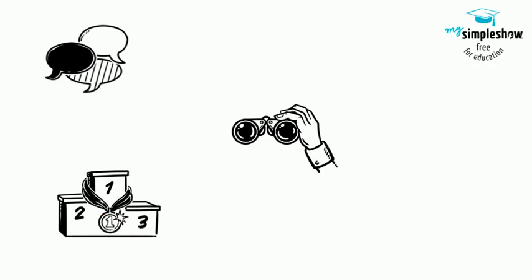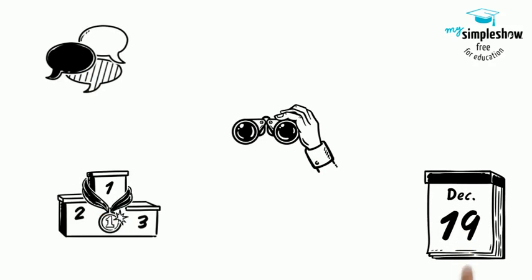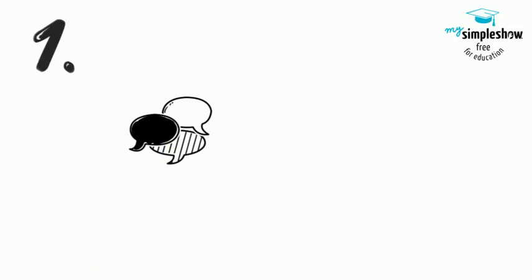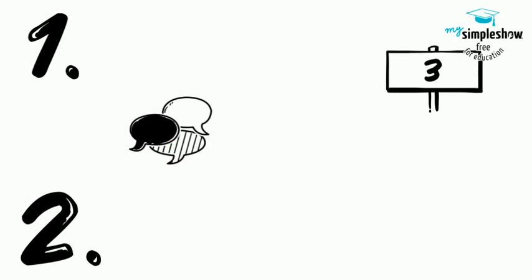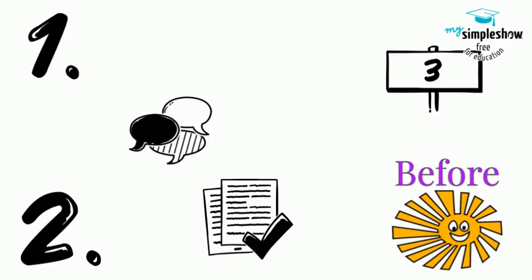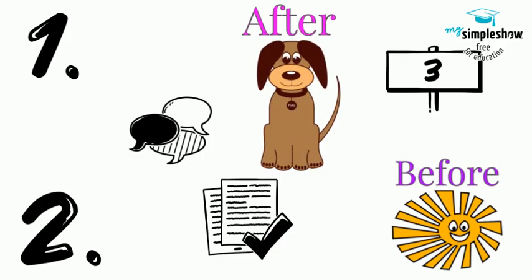Words that show order include dates, like December 19, 2020. Words like first, second, and third tell the order of things. And then there are more complicated clue words, like before the sun rose or after the dog ran away.